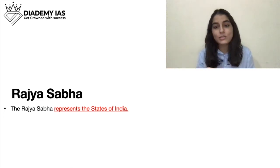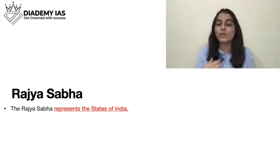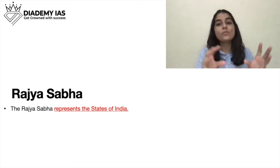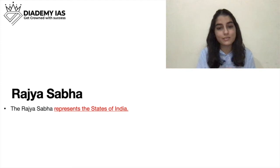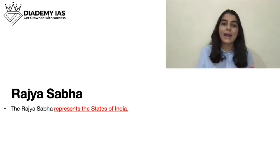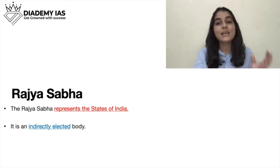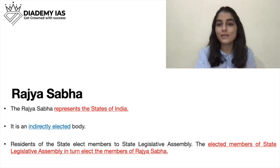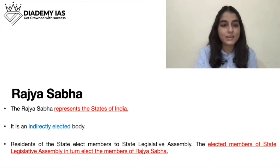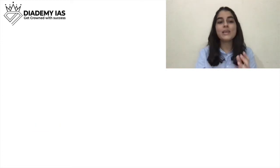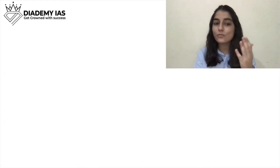Sikkim has a very small population, that is why it has only one member. Residents of each state elect members to the state legislative assembly — we elect MLAs, and the elected MLAs in turn elect the members of Rajya Sabha.